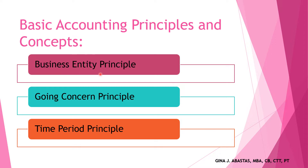First, we have the business entity principle. A business entity or business enterprise is separate from the owner or investor — separate and distinct. Any personal transactions of its owner should not be recorded in the business accounting books unless the owner's personal transaction involves adding or withdrawing resources from the business.